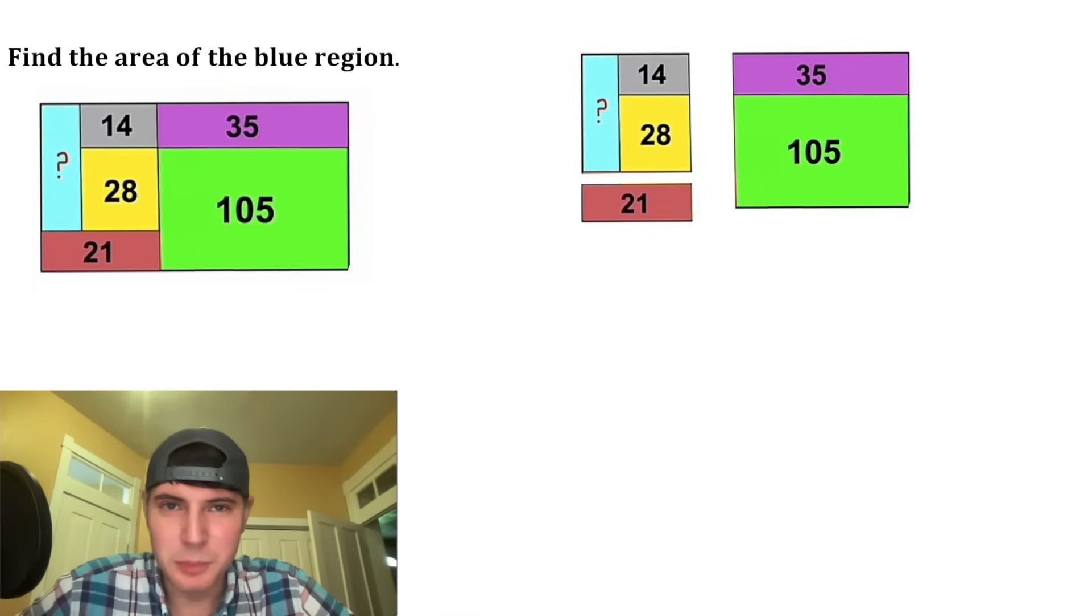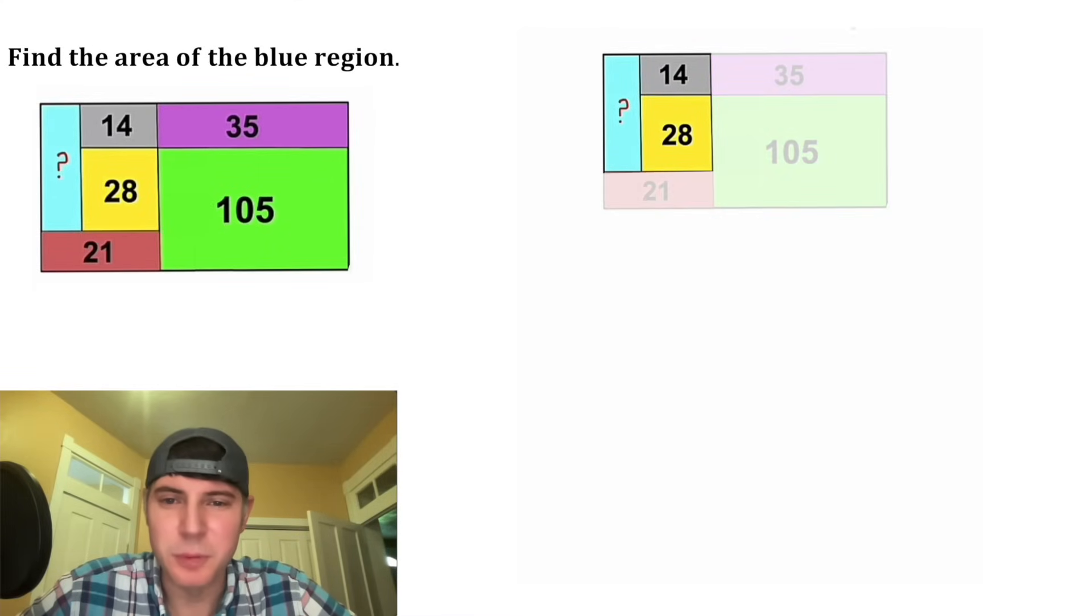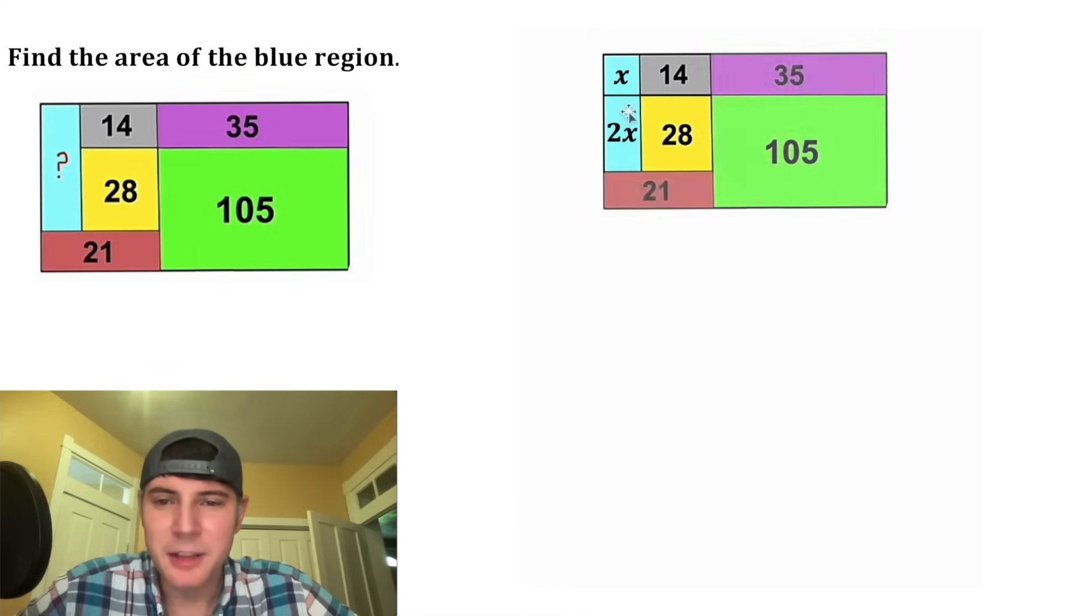First, I'm noticing we can split this up in a couple different ways, and I want to focus on this part right here. Let's get rid of the question mark and continue this line right here. Let's call this portion x, and then since 28 is double the 14, this blue portion would be 2x.